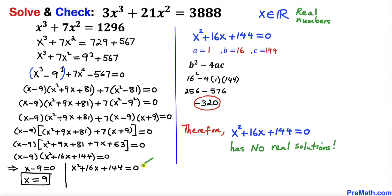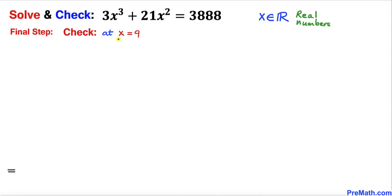Looking at our discriminant table, since the discriminant is a negative number, we conclude that this quadratic equation has no real solution. Therefore, the only solution we have is x = 9.